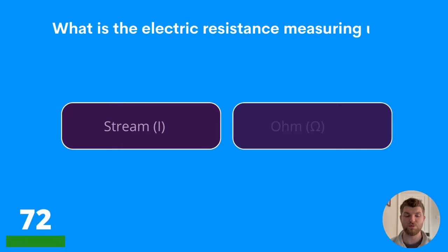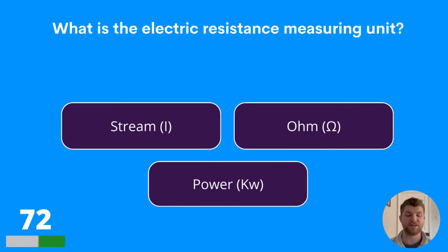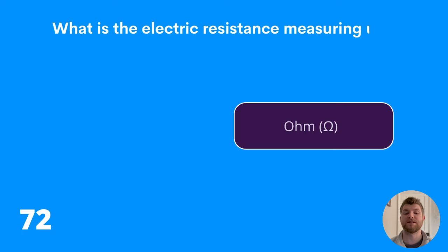Question seventy-two: what is the electric resistance measuring unit? Stream, ohm, or power? You've got the symbols there that represent each of those units. The electric resistance measuring unit is an ohm.